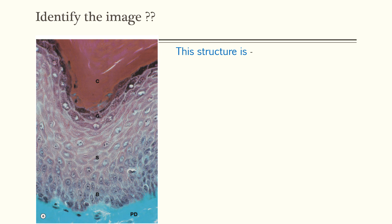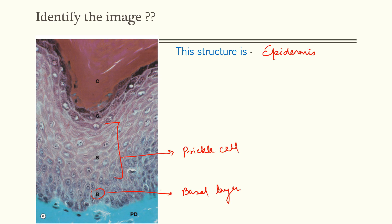Can you identify the image? The structure shown here is the epidermis. Now let's identify with the help of layers. This is the basal layer. From here to here is the spinosum layer, or prickle cell layer. This is the granular layer. And this is the keratin layer, stratum corneum.